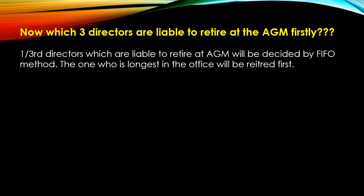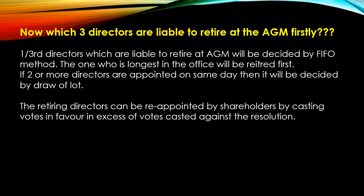The one-third of directors liable to retire at the AGM will be decided by the FIFO method — First In, First Out. This means that out of the 11 directors, whichever director was appointed first — i.e., who has served the longest period in office — will retire first. If two directors were appointed on the same day, then the one to retire will be decided by a draw of lot, as determined by the board.